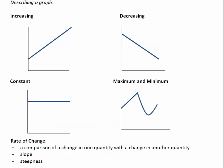Describing a graph. When a graph is increasing, it's moving up as we move from left to right on the x-axis. When a graph is decreasing, the graph is moving down as we move from left to right on the x-axis, just like when we're reading left to right.